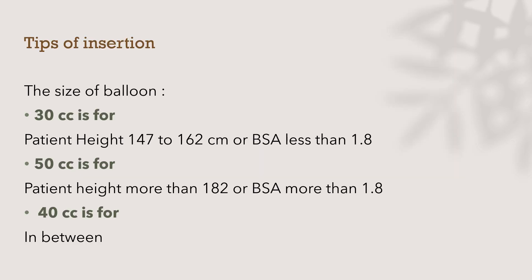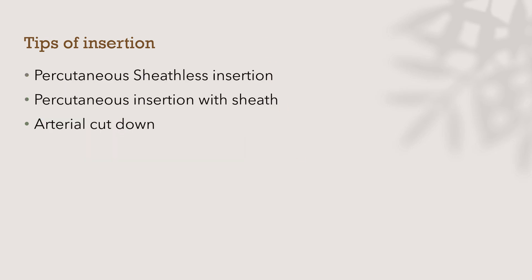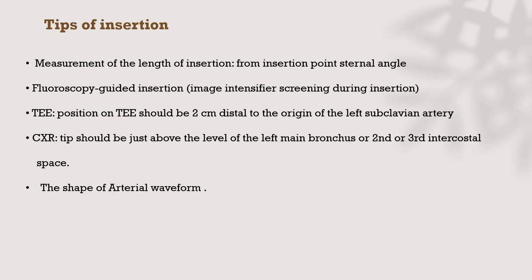Regarding balloon sizing and steps of insertion: a 30 cc balloon is used for patients with height 147 to 162 cm or body surface area less than 1.8 m². A 50 cc balloon is used for height greater than 182 cm or BSA greater than 1.8 m². A 40 cc balloon is used for heights in between. Insertion can be percutaneous with or without a sheath; if arterial access is difficult, it can be done via arterial cutdown.